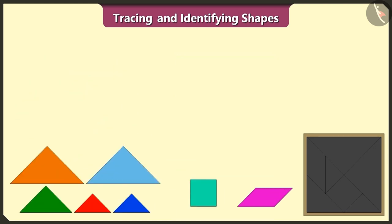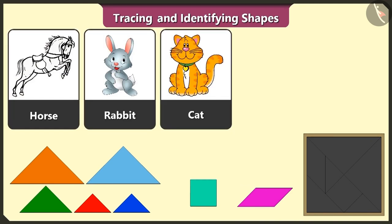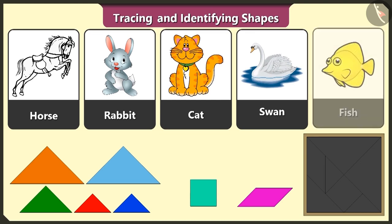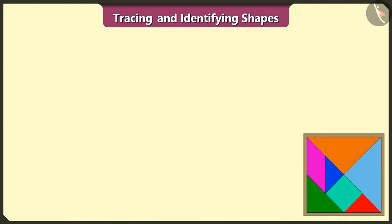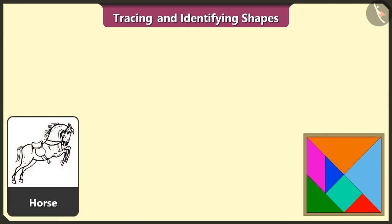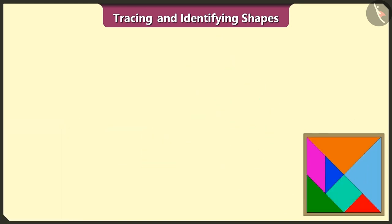Today we will create figures of horse, rabbit, cat, swan, and fish using these shapes. Look, this is a horse. Now we will make a horse using five triangles, one square, and one quadrilateral. See, the horse is ready.